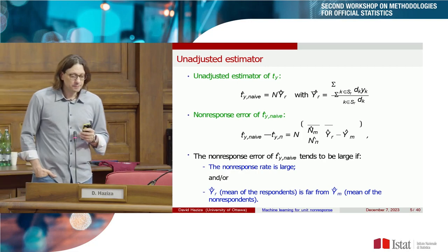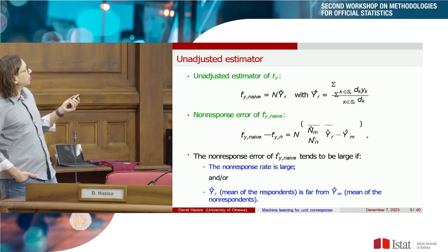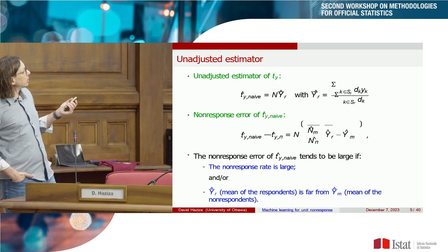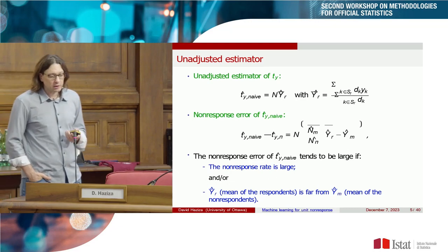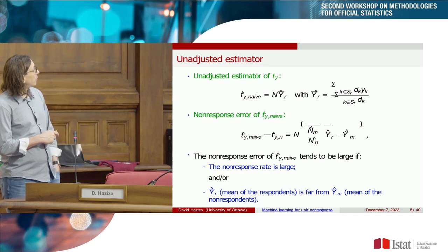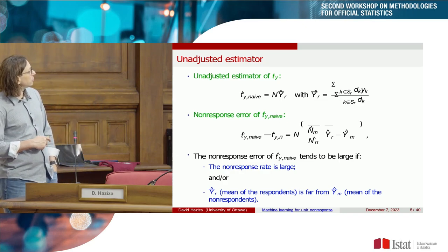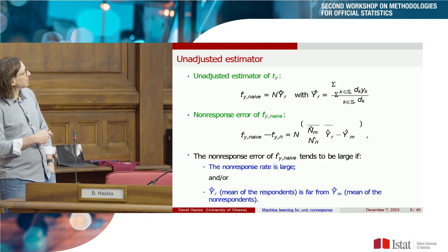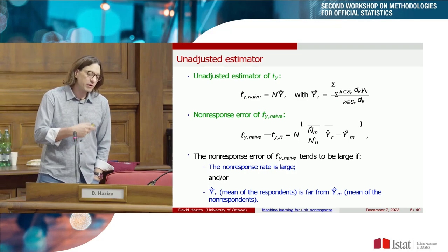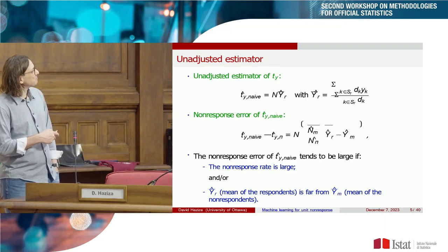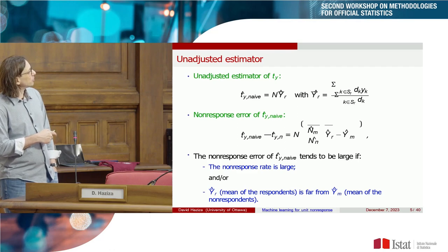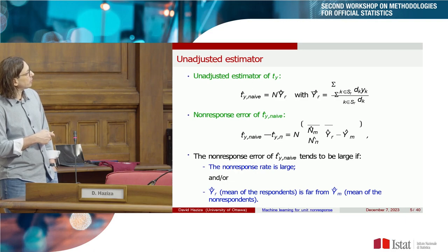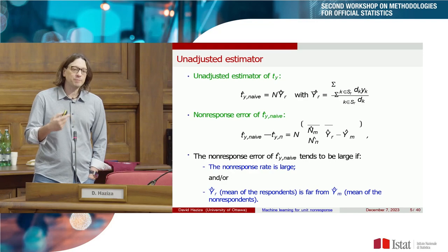The unadjusted estimator is the weighted mean of the respondents multiplied by capital N for the total. The non-response error of this unadjusted estimator is the difference between the naive estimator and the prototype estimator — essentially the ratio representing an estimate of the non-response rate multiplied by the difference between the mean of the respondents and the mean of the non-respondents.